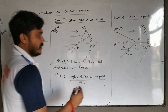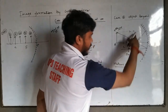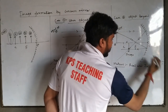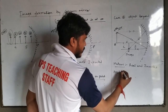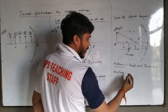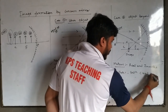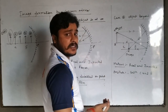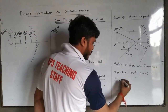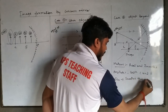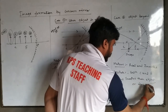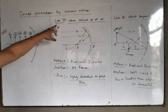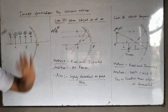Write three things about the image. Nature: the rays actually meet with each other, so nature is real and inverted. Position: the image is in between C and F. Size: the image size is smaller than the object size, so the size is diminished.